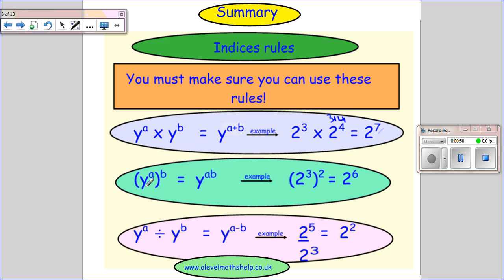Here I've got a power of a power, so this y to the power of a, all to the power of b is the same as y to the power of a times b. So 2 cubed all squared is the same as 2 to the power of 6, because 3 times 2 will give you 6.